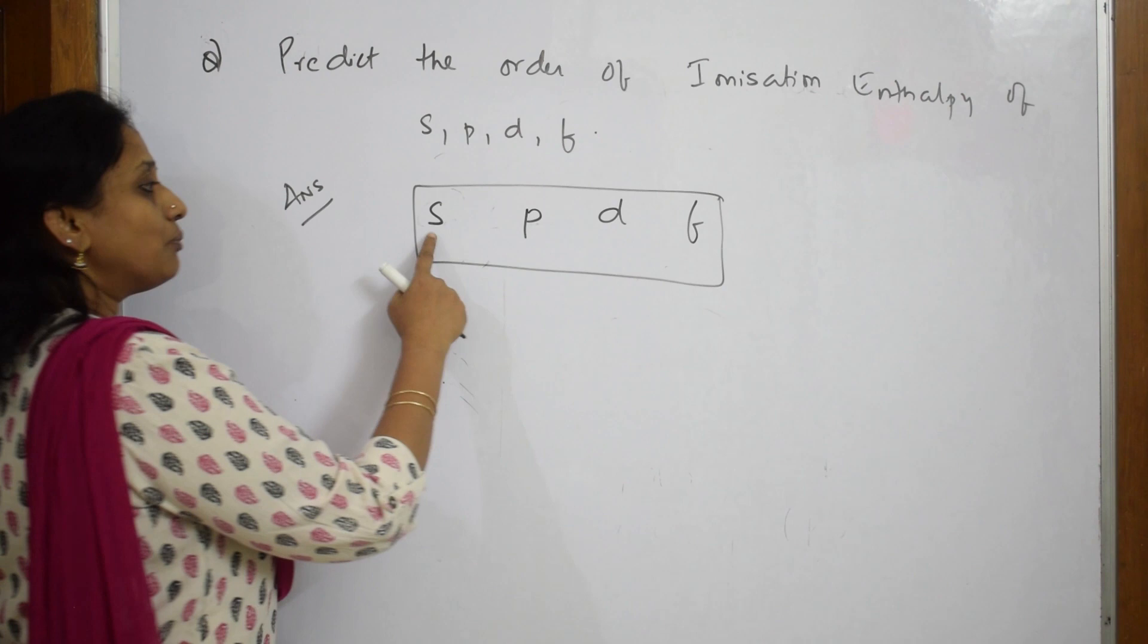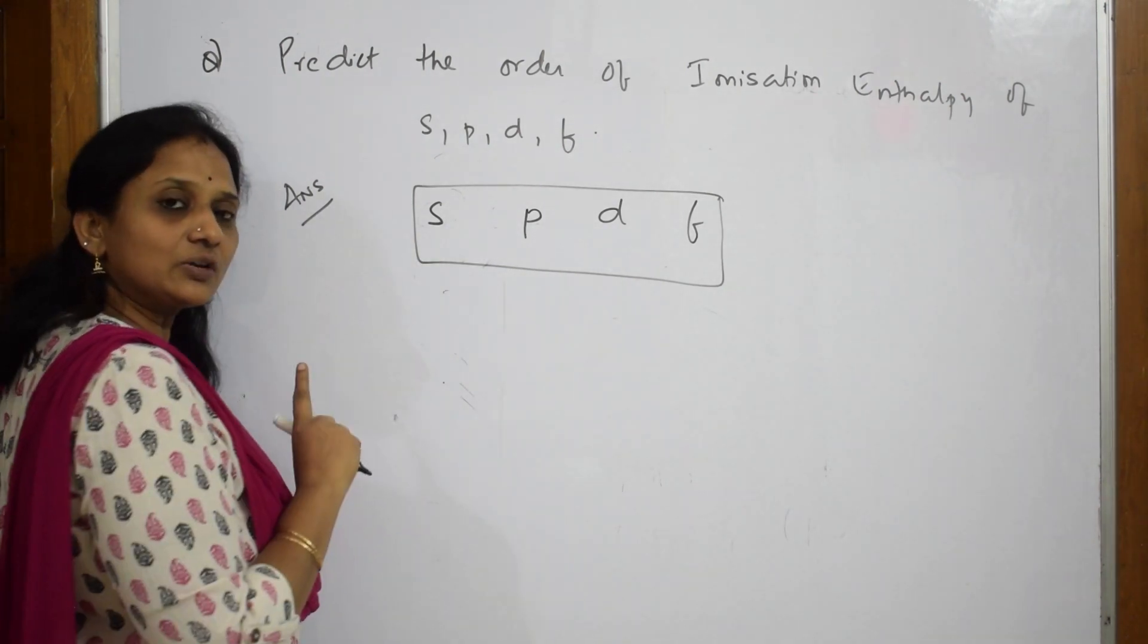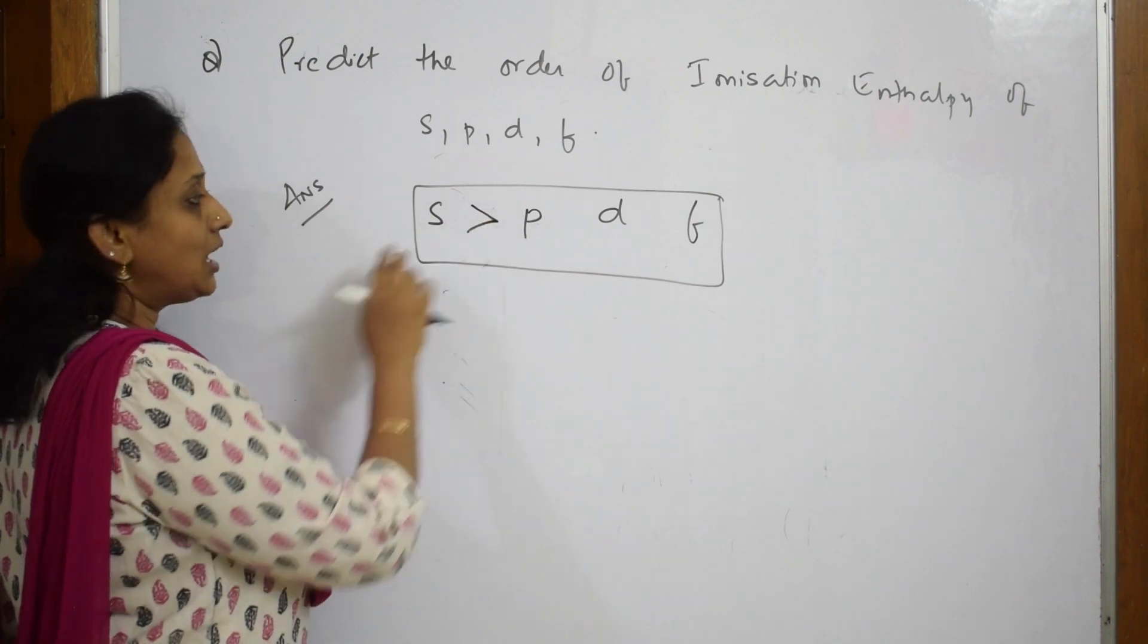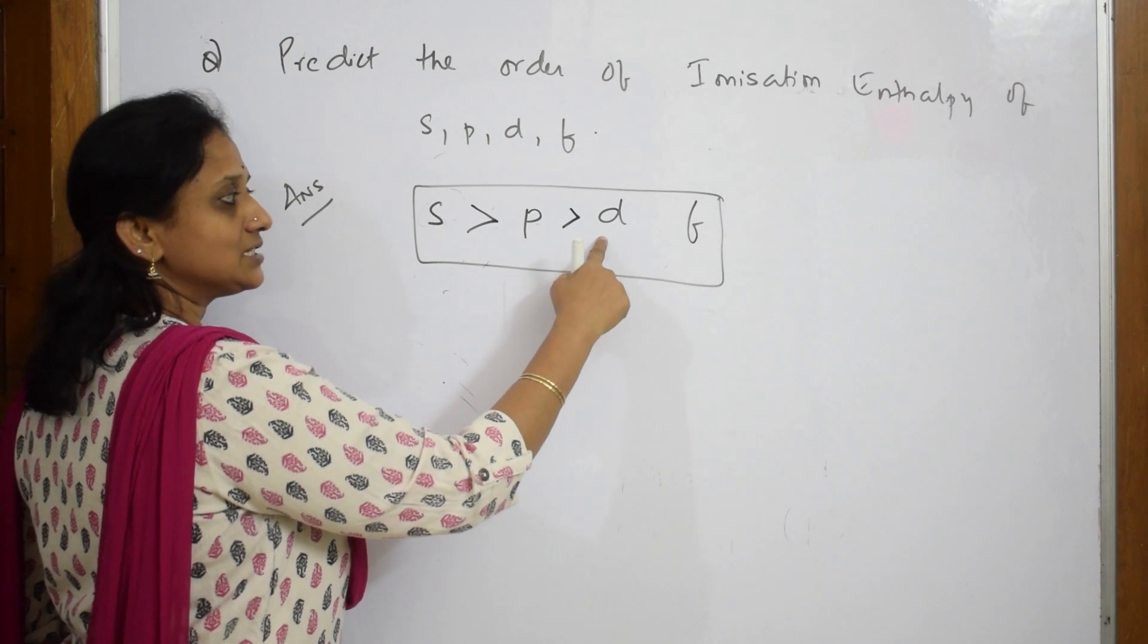S requires the most ionization enthalpy. After that, p will require the second most. After that, d will require less, then f requires the least. So what can you write?